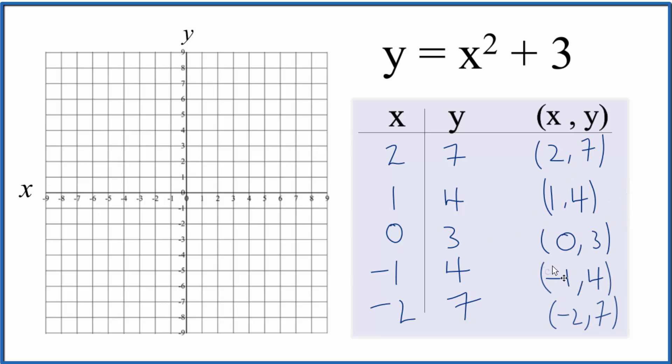These are the points we'll graph for this equation, y equals x squared plus 3. 2 on the x-axis and 7 on the y. We have 1 on the x and then we go to 4. We have 0 on the x and 3 on the y, and then we have negative 1, 4 and negative 2, 7.